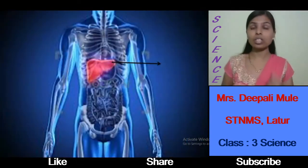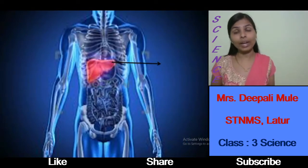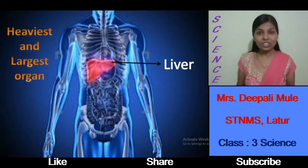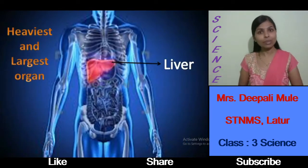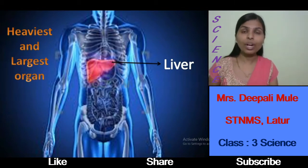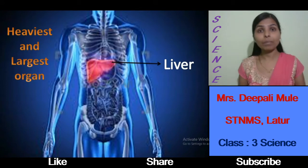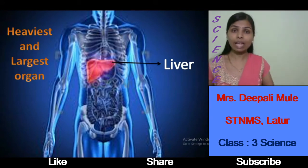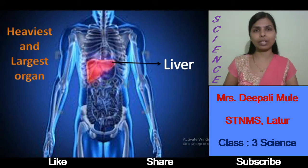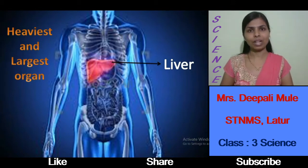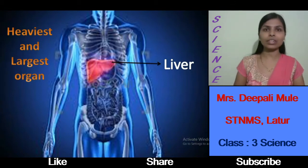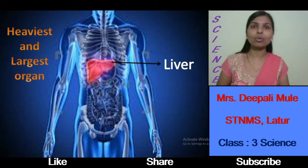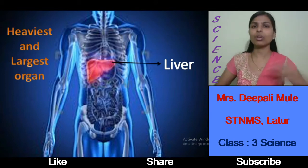The next organ is the liver. The liver is the largest and heaviest organ present in our body. The function of the liver is that it produces bile juice, and this bile juice helps us to digest our food properly. Another function of the liver is that it stores glucose.